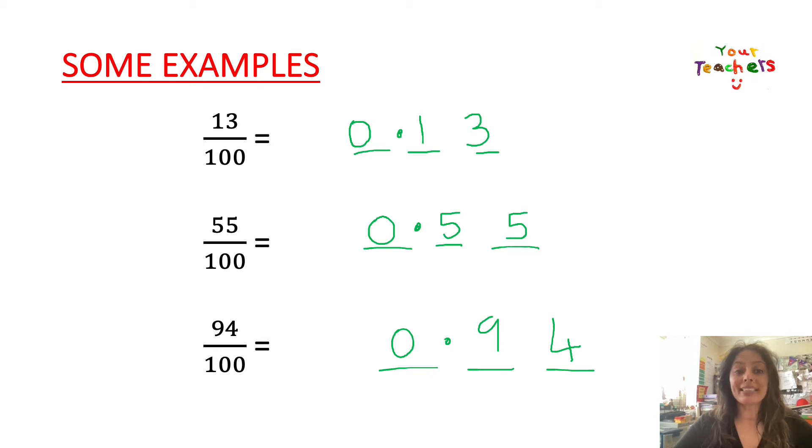1, 3, decimal point. Because remember, it's not a whole number. It's part of a whole. So we've got 0 in front. So 0.13. Have a look at what we've done for 55 over 100.